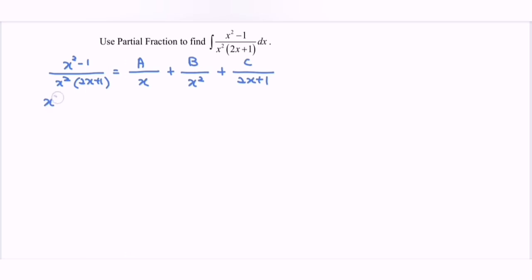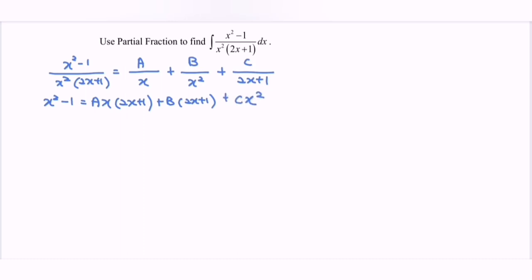So x squared minus 1 equals A multiplied with x multiplied with 2x plus 1, plus B multiplied with 2x plus 1, plus C where we have cx squared. So that is the equation. So we have A, then B, then C.